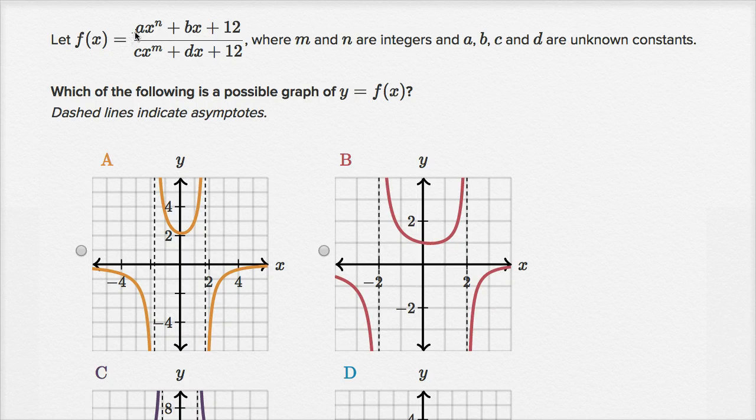Let f of x equal a times x to the n plus bx plus 12 over c times x to the m plus dx plus 12, where m and n are integers and a, b, c, and d are unknown constants.